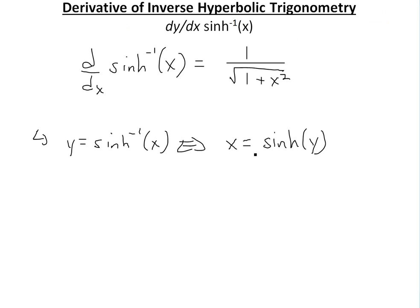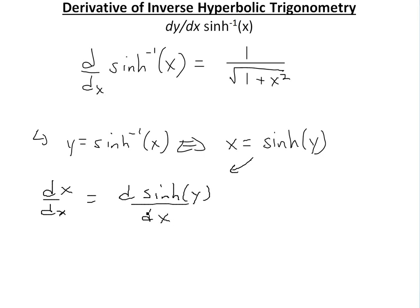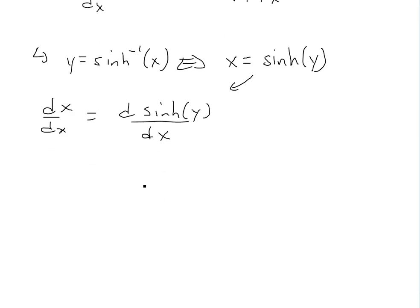We can use implicit differentiation here. If we take the derivative on both sides, dx over dx is obviously equal to 1. So on the left side we have 1, and on the right side we have the derivative of hyperbolic sine of y. That derivative equals hyperbolic cosine.